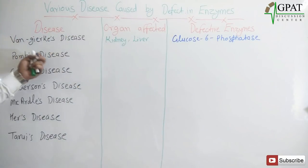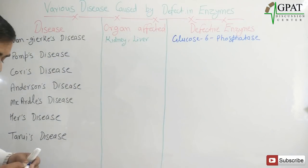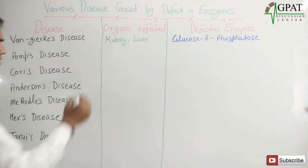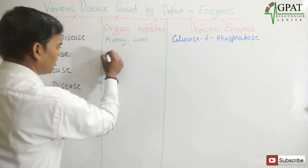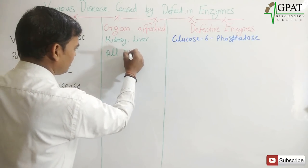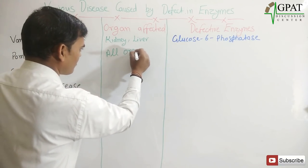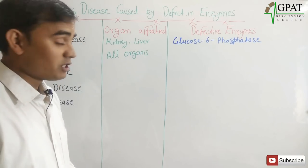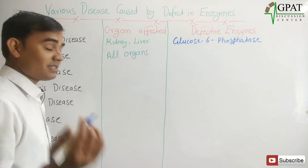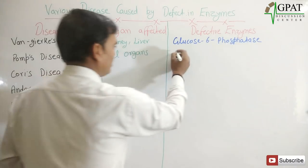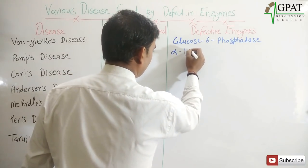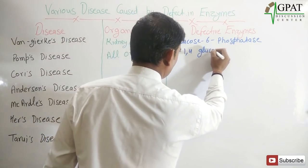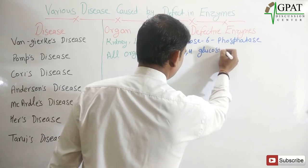Next, Pompe's disease. In Pompe's disease, all organs get affected. The enzyme which is responsible for Pompe's disease is alpha-1,4-glucosidase.